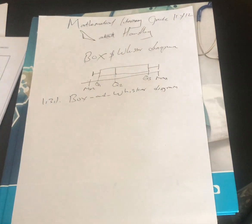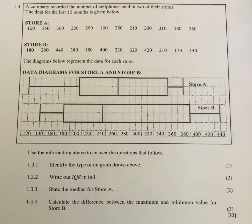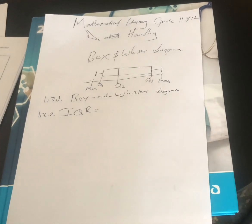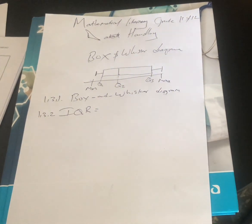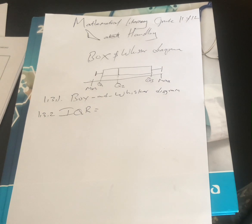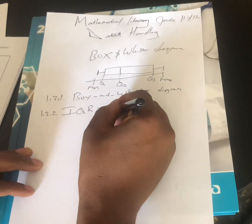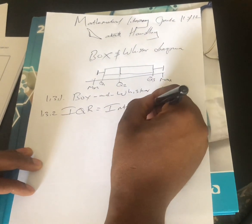Question 1.3.2 says: write out IQR in full. We know that IQR stands for interquartile range. We just write that to answer the question — interquartile range.